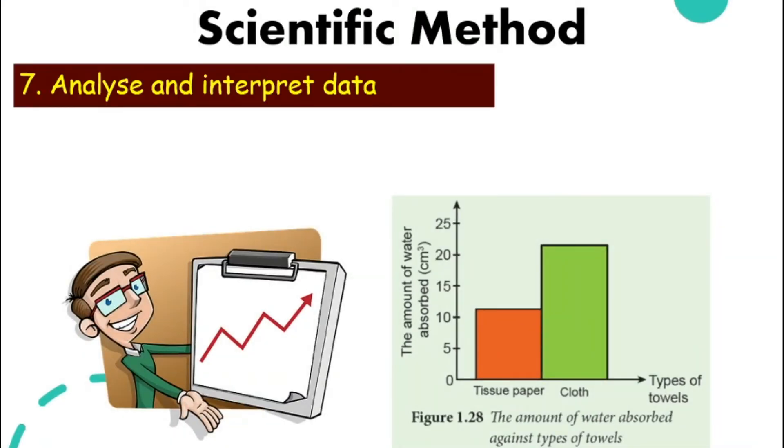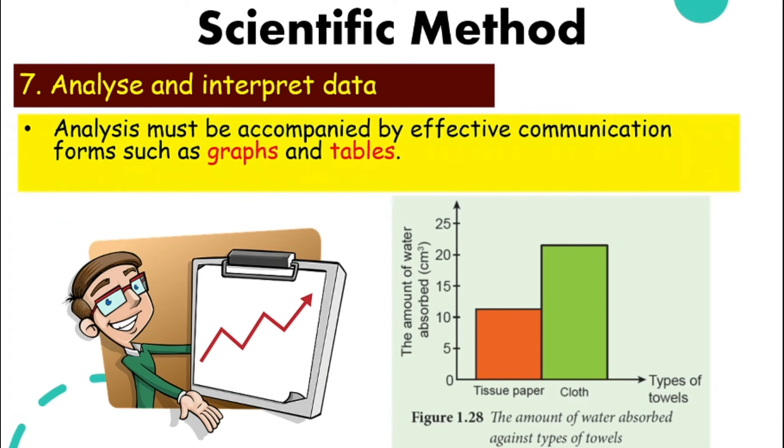Next, we need to analyze and interpret data. We don't just write down the data, we need to understand the data. The data needs to make sense. Analysis needs to be accompanied by effective communication forms such as graphs and tables. From the data that we have collected, we can interpret it by making a graphic presentation, for example, a table here. The graphs and tables will assist us to easily interpret the data. From the table, we can clearly see that the tissue paper can only absorb somewhere around 11 or 12 centimeter cube of water, whereas the cloth can absorb more than 20. So we know that the cloth actually can absorb better than tissue paper.